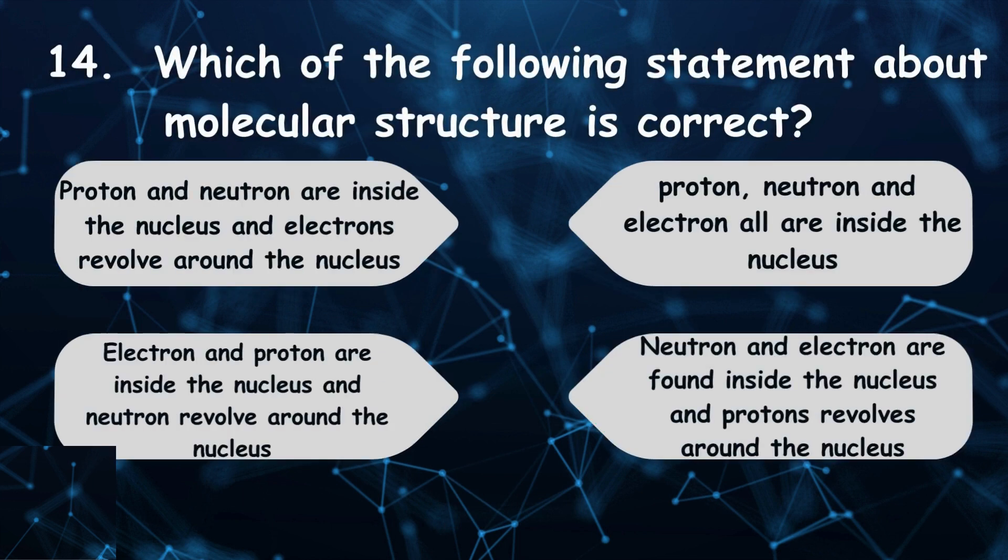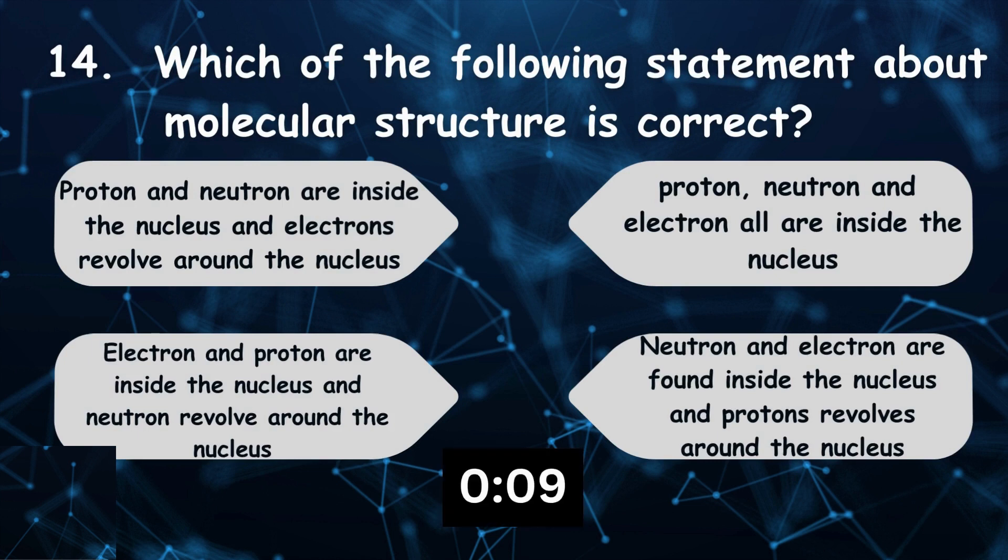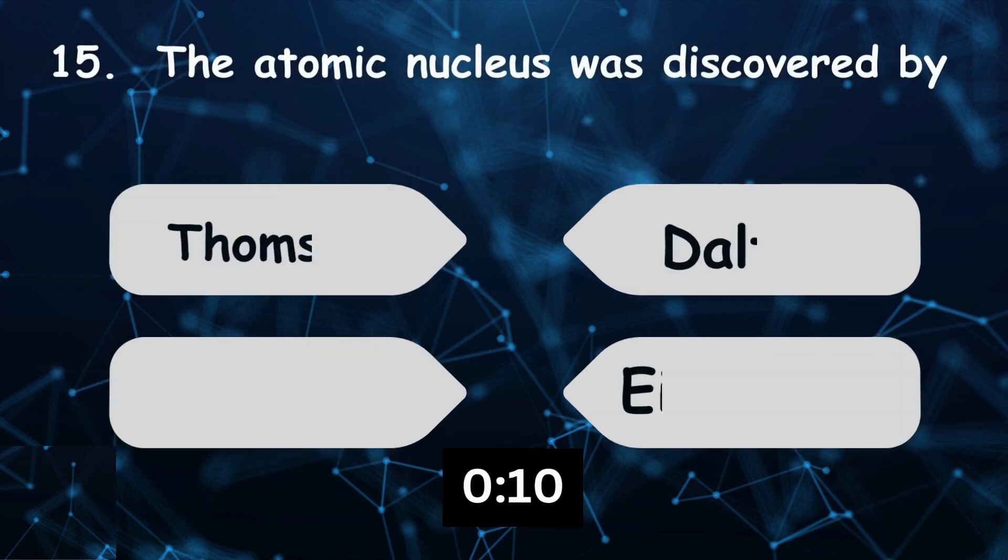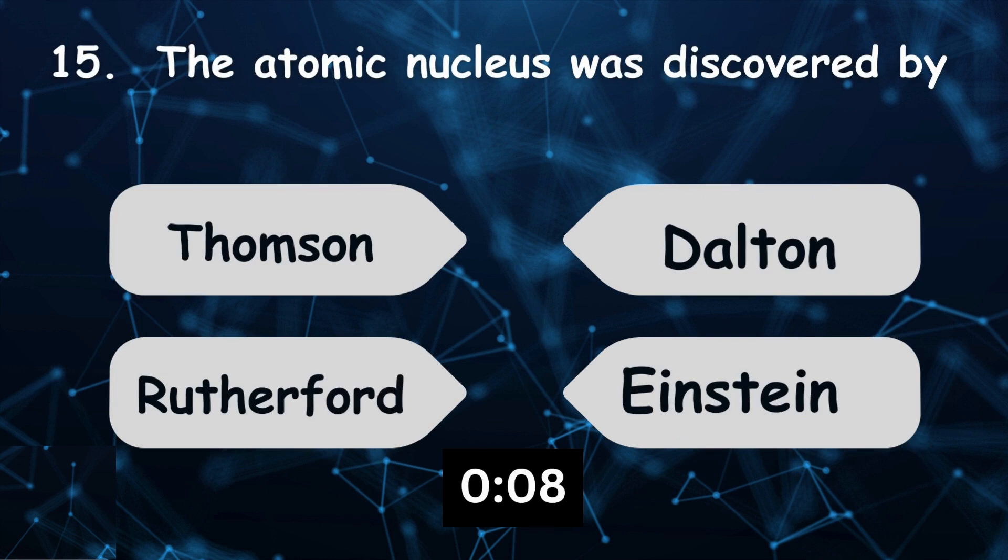Which of the following statement about molecular structure is correct? The answer is proton and neutron are inside the nucleus and electrons revolve around it. The atomic nucleus was discovered by